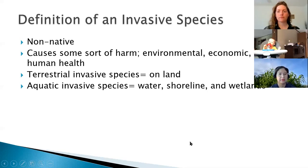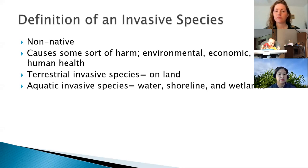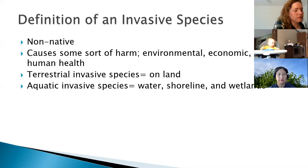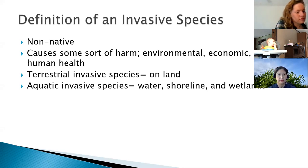For something to be classified as invasive, the plant or animal has to cause harm in some way — harm to the environment, something that causes us to lose money, or actual harm to our health. For the purposes of this presentation, everything classified as terrestrial means stuff on land, and everything classified as aquatic includes not only the water but also the shoreline and the wetlands.